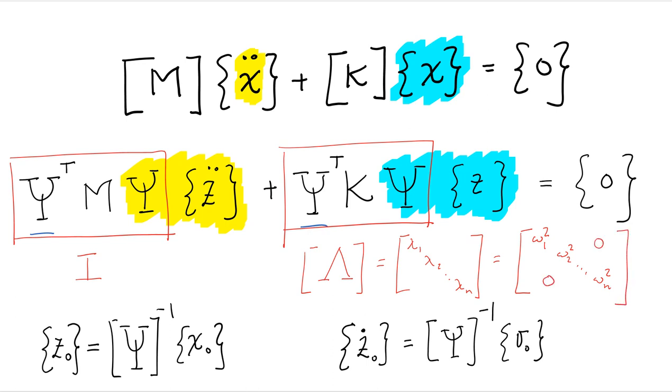This matrix is diagonal due to the property of the mode shapes, which are orthogonal with respect to m and k. And mass normalized mode shapes are not only orthogonal, they are orthogonal with the mass matrix.